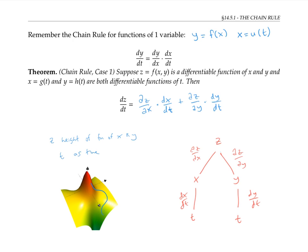dz/dt is telling us how our height changes over time. Partial z partial x and partial z partial y tell us how our height changes with respect to our x and y motion, and dx/dt and dy/dt tell us how our x and y variables change with respect to time.